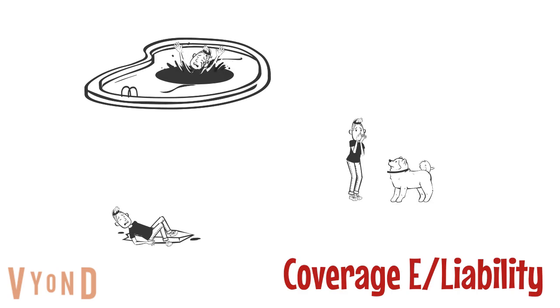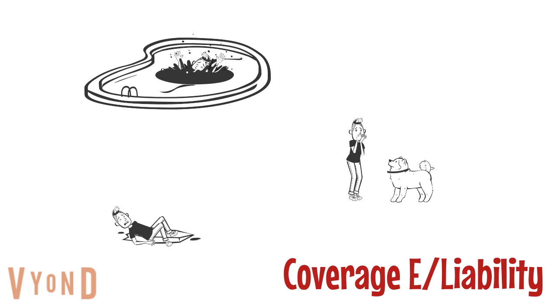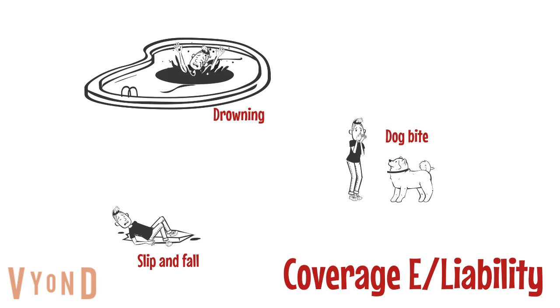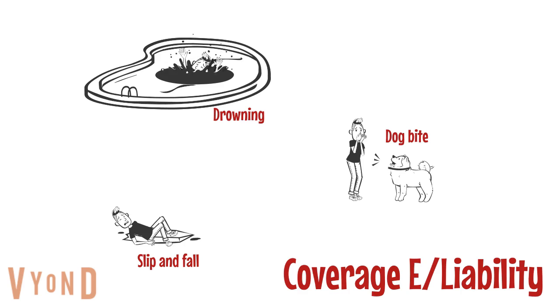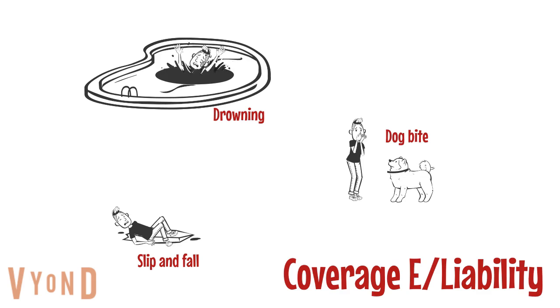Coverage E, or liability, protects you should you be found liable for bodily injury or property damage to someone or something not involving an automobile. Please note certain dog breeds are ineligible for coverage with many carriers.